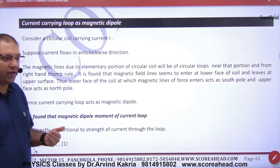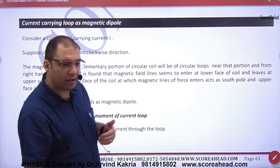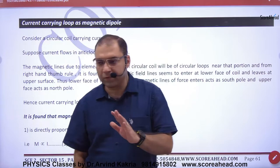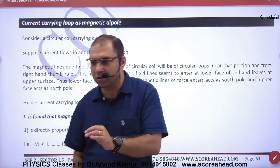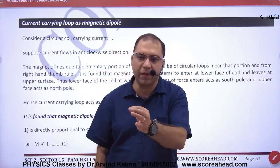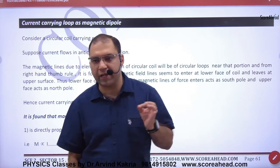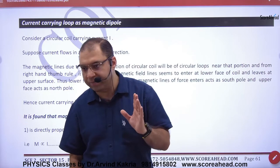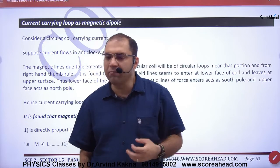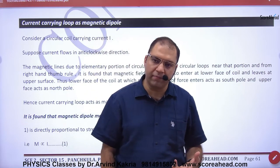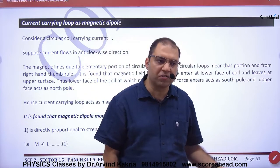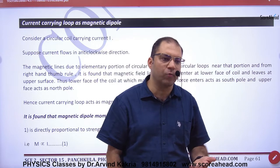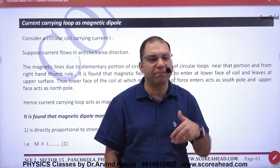Current-carrying loop as a magnetic dipole. Suppose you have a current-carrying loop — there is a ring and there is a current. Now, a current-carrying loop generates B in the center.